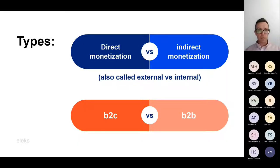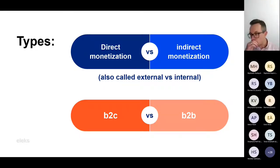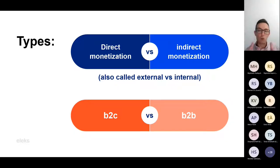There are different types of data monetization. Direct monetization means basically selling your data in one way or another, while indirect or internal monetization means using the data to your advantage within the company — making better decisions, reducing costs, increasing revenue. I'll be mostly focusing on direct monetization. There are also other classifications: B2B, when one company sells data to another, or B2C, when a company sells data to its individual consumer customers. There will be examples of that in future slides.